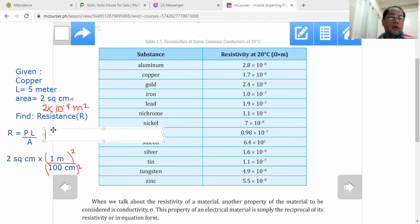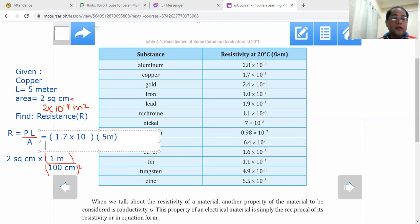You can now substitute that in our expression. If ρ is 1.7 times 10 to minus 8, then you multiply it with length that is 5 meters. Our length is 5 meters, then we divide this with an area that equals 2 times 10 to minus 4. This is now in square meters. Then we divide that.